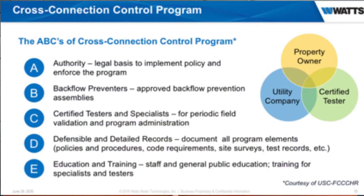D is detailed and defensible records — the CYA part of it: cover your butt. You want to make sure all your records are straight. Once a year you should be testing these things, and when they're installed they need to be tested and certified. And E is education and training — something like this, having the Joyous Agency come to your office or your job site to help train you on backflow prevention.